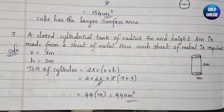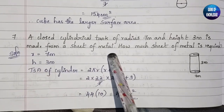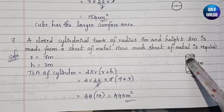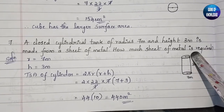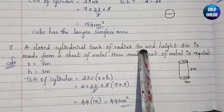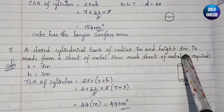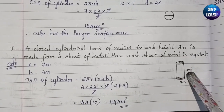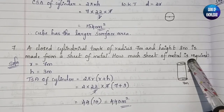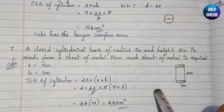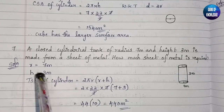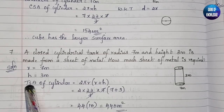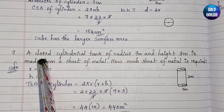Next, question 7: a closed cylindrical tank of radius 7 meters and height 3 meters is made of a sheet of metal. We have to find how much metal sheet is required. Since the values of r and h are given, we use the TSA formula: TSA of cylinder = 2πr(r + h).